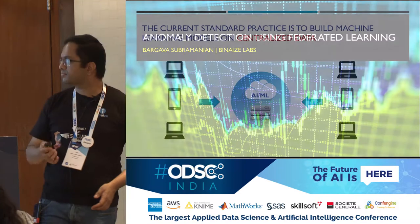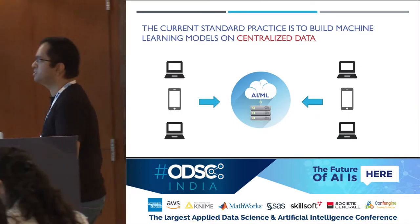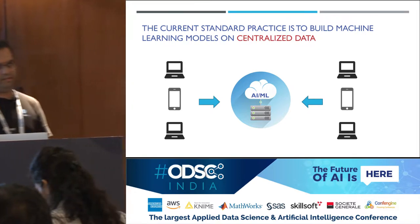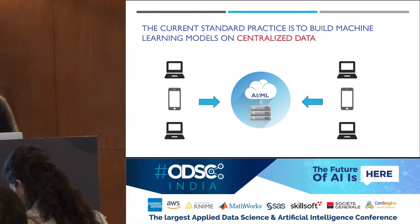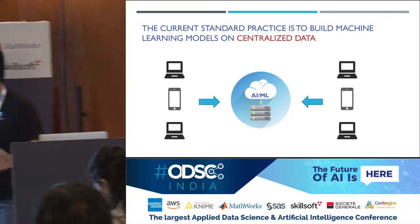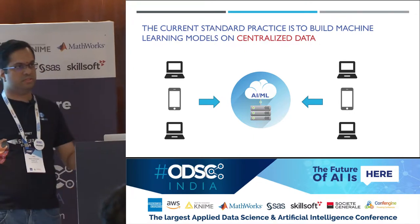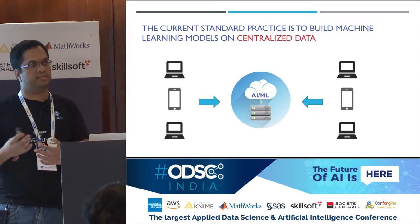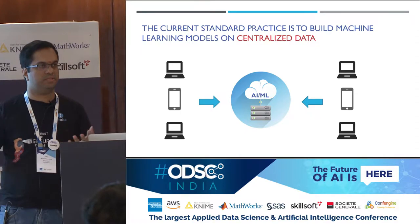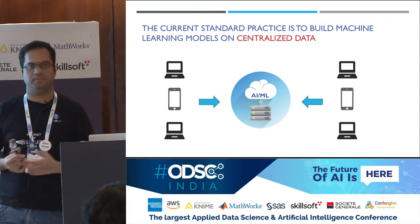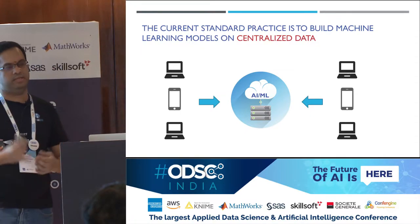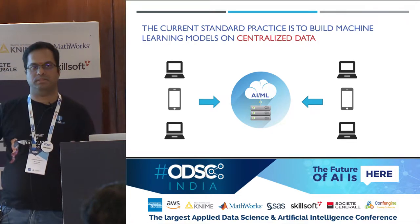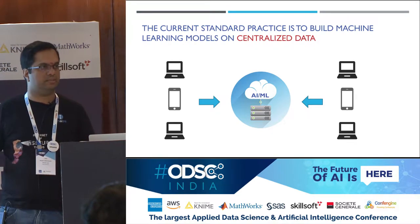This is the current standard paradigm of how machine learning models are currently built. You have data that is getting generated from multiple sources. It goes in as events to your centralized cloud system, and then the models are trained. Eventually the inference happens either on the cloud or on the device.